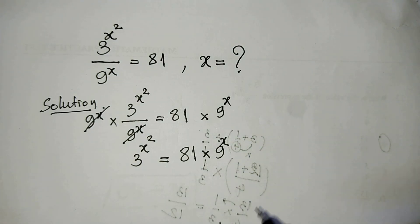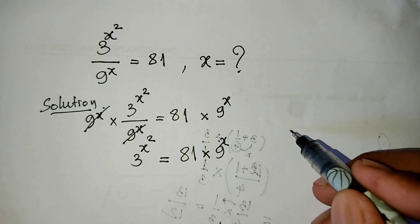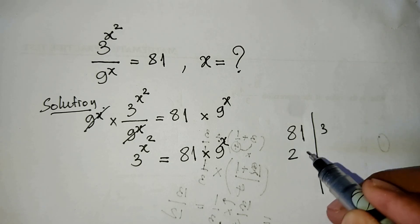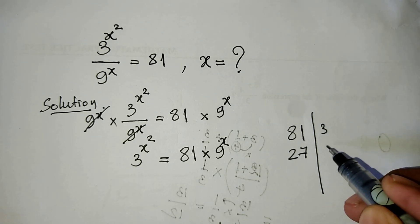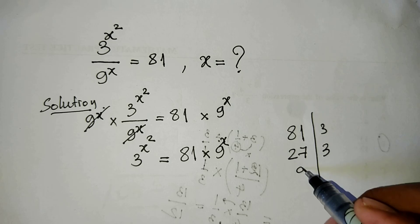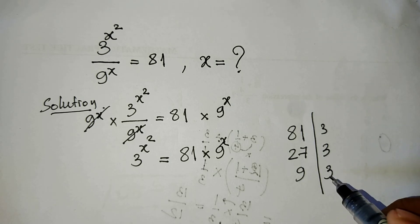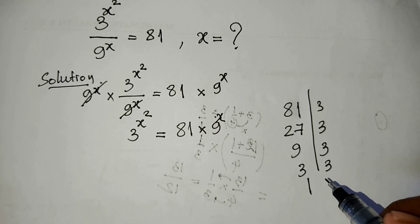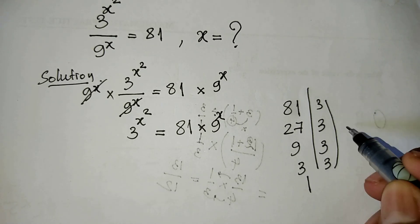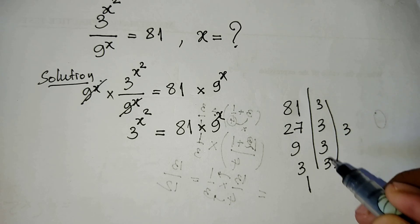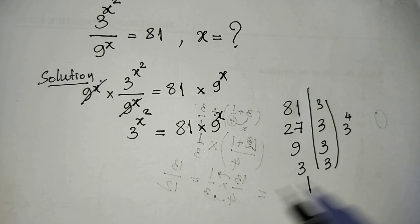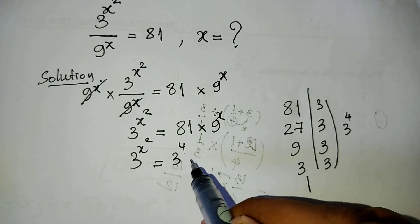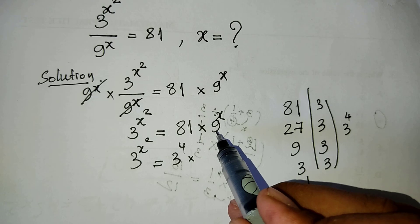And now, 81: we divide by 3 equals 27, divide by 3 we get 9, divide by 3 we get 3, divide by 3 we get 1. So here we get 3 to the power 4. We get 3 power x squared equals 3 power 4 times 9 power 8.